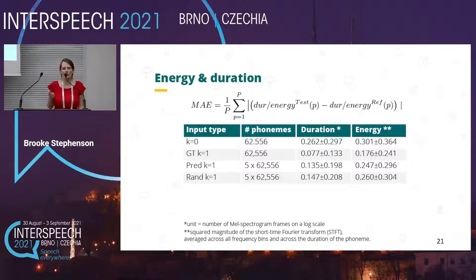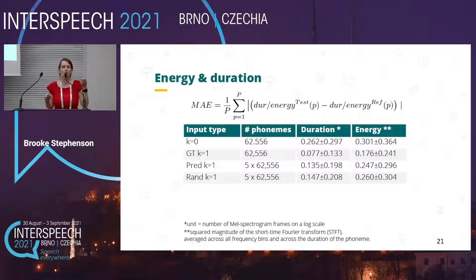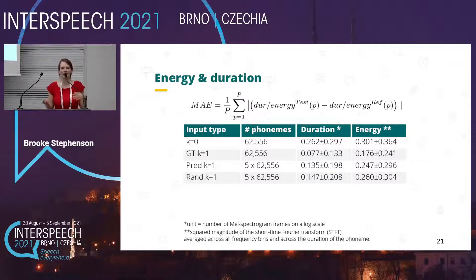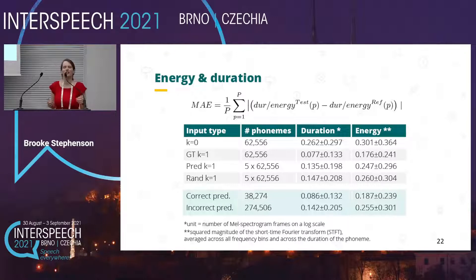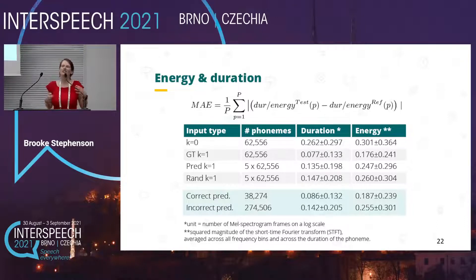Here are the results for both energy and duration. The k equals zero condition is very far from the reference audio. The ground truth k equals one is very close to the reference. In between, we have the GPT-2 and random predictions, which are quite close together. A statistical t-test confirmed they belong to separate distributions. However, when we further separate GPT-2 predictions into correct and incorrect predictions, the already small difference between random and GPT-2 narrows even further. So the syntactic accuracy from GPT-2 predictions does not help prosody very much, if at all.